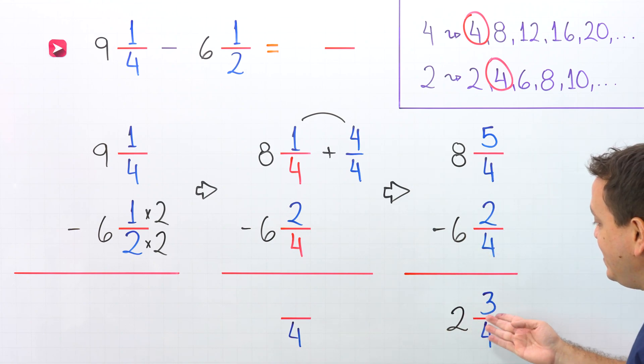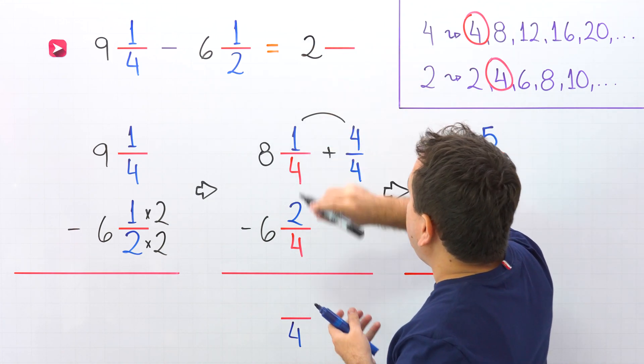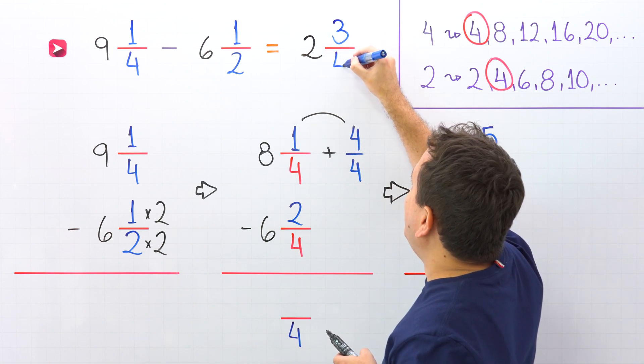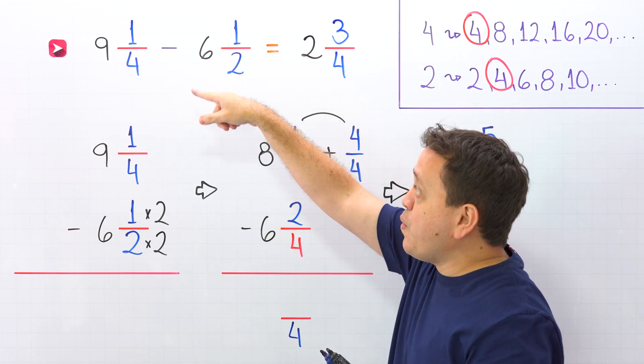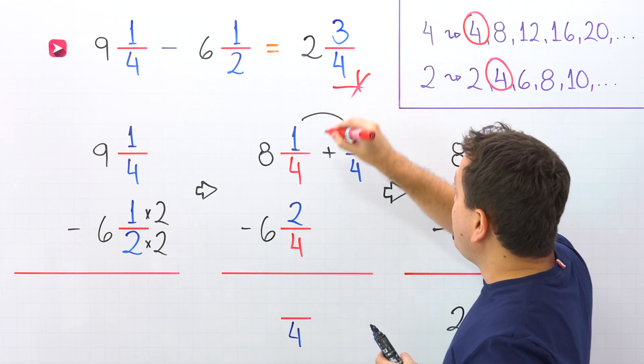The final answer is 2 and 3 fourths. We can copy that answer over here. 2 and 3 fourths. Therefore, 9 and 1 fourth minus 6 and 1 half give us 2 and 3 fourths.